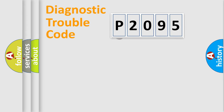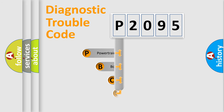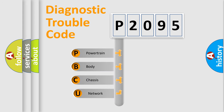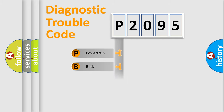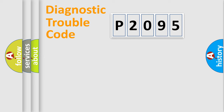First, let's look at the history of diagnostic fault code composition according to the OBD2 protocol, which is unified for all automakers since 2000. We divide the electric system of an automobile into four basic units: Powertrain, Body, Chassis, and Network.